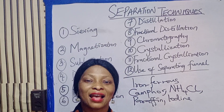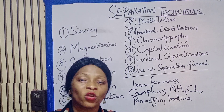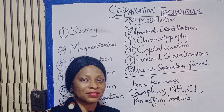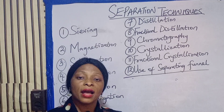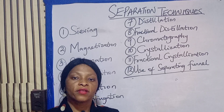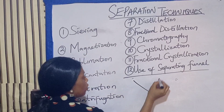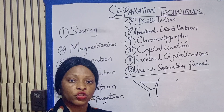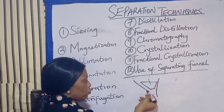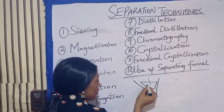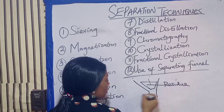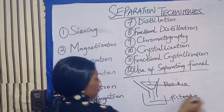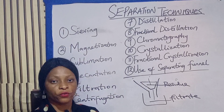The next one is filtration. Filtration is used to separate insoluble solid from liquid. An example is a mixture of sand and water. Filtration is only attainable with the use of filter paper. During filtration you use a funnel and filter paper — you pour the mixture, such as sand and water, and the sand settles. The sand that settles is known as the residue, and the liquid or water that passes through is known as the filtrate.